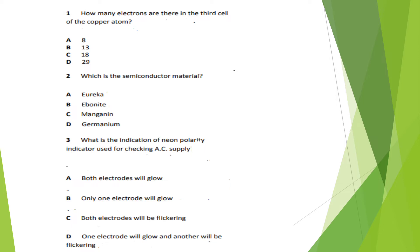Now we have 20 questions. First question: How many electrons are there in the third shell of the copper atom? Options: 8, 13, 18, 29. The answer is 18 electrons — Option C.